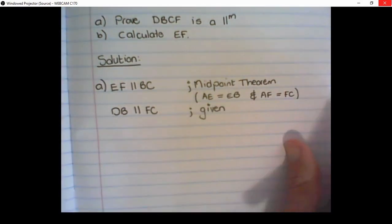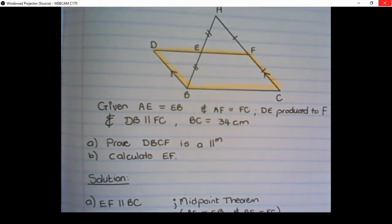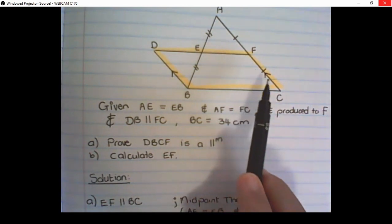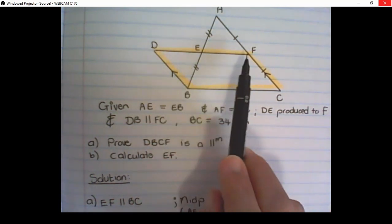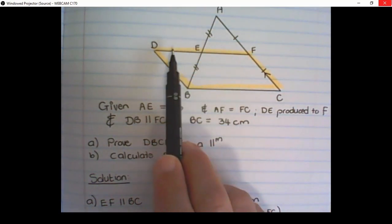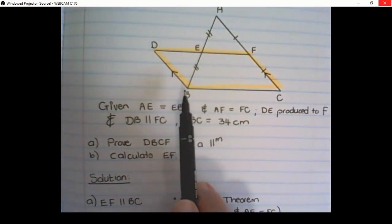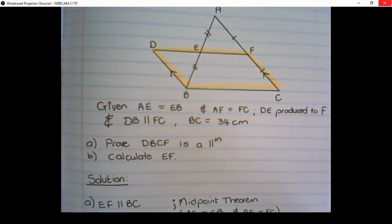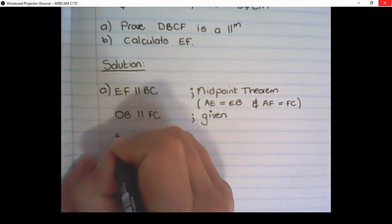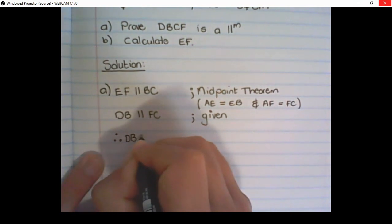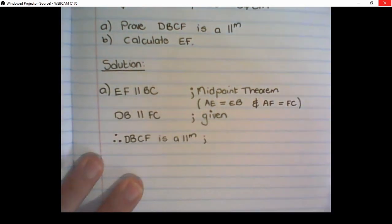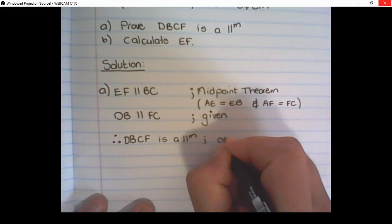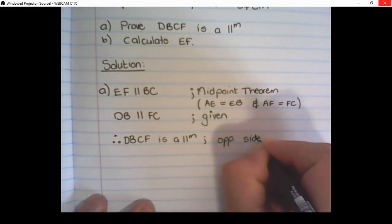Now, we have two sets of lines parallel to each other. We have DB parallel to FC, and DF parallel to BC. Remember, DF is part of EF. So therefore, this line is parallel to that line. And you can therefore say, DBCF is a parallelogram. And the reason why it's a parallelogram is opposite sides are parallel.